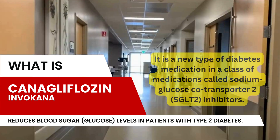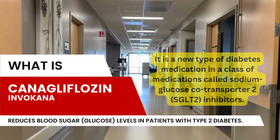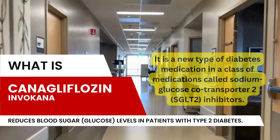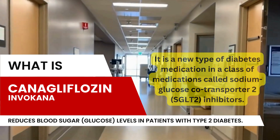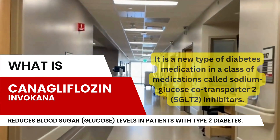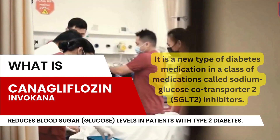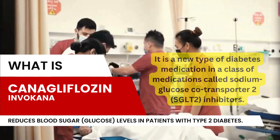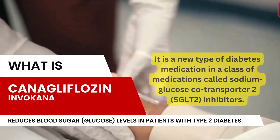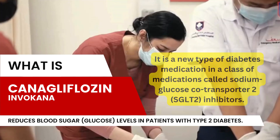Canagliflozin blocks the action of SGLT2. Therefore, canagliflozin reduces the reabsorption of glucose from renal tubules, leading to more excretion of glucose in urine.